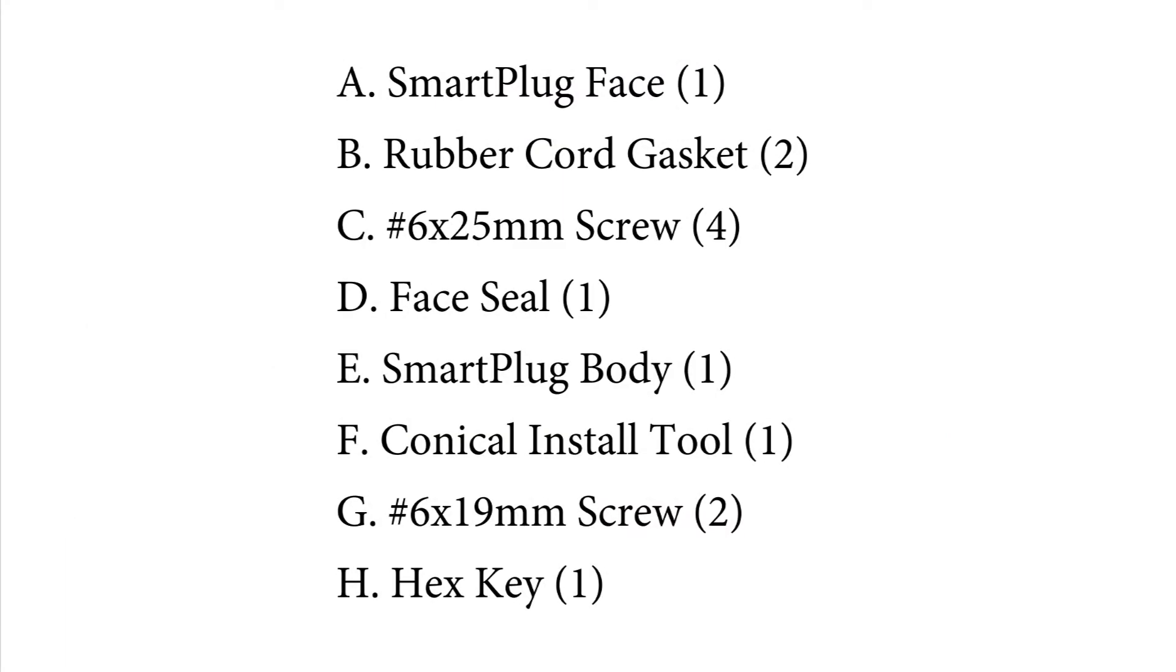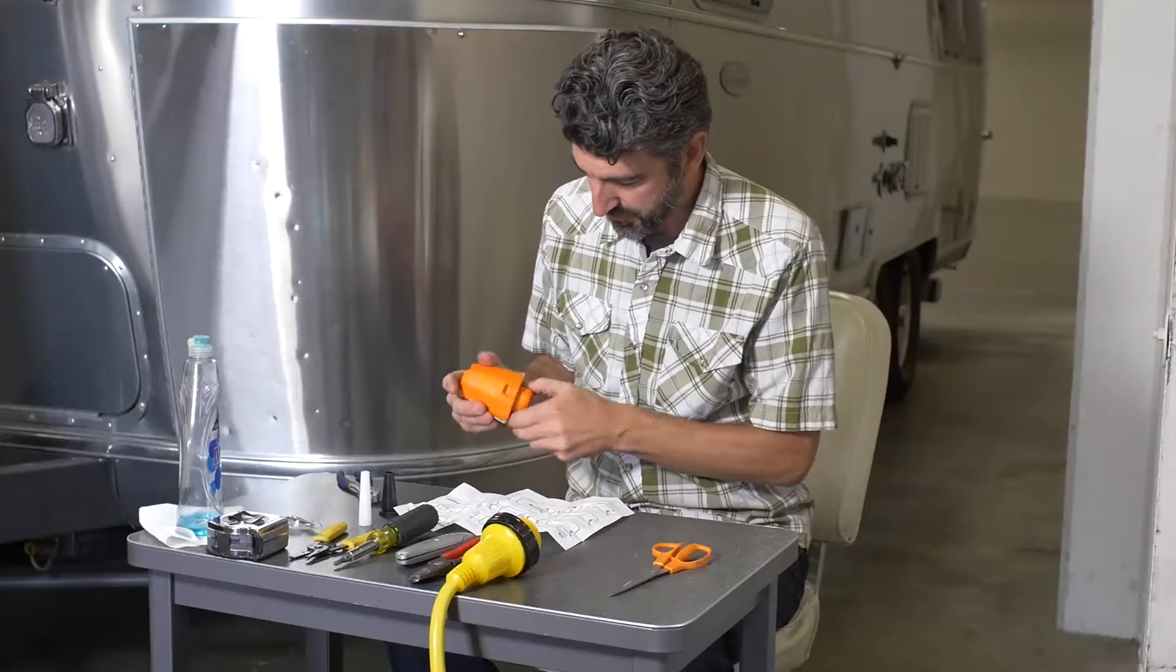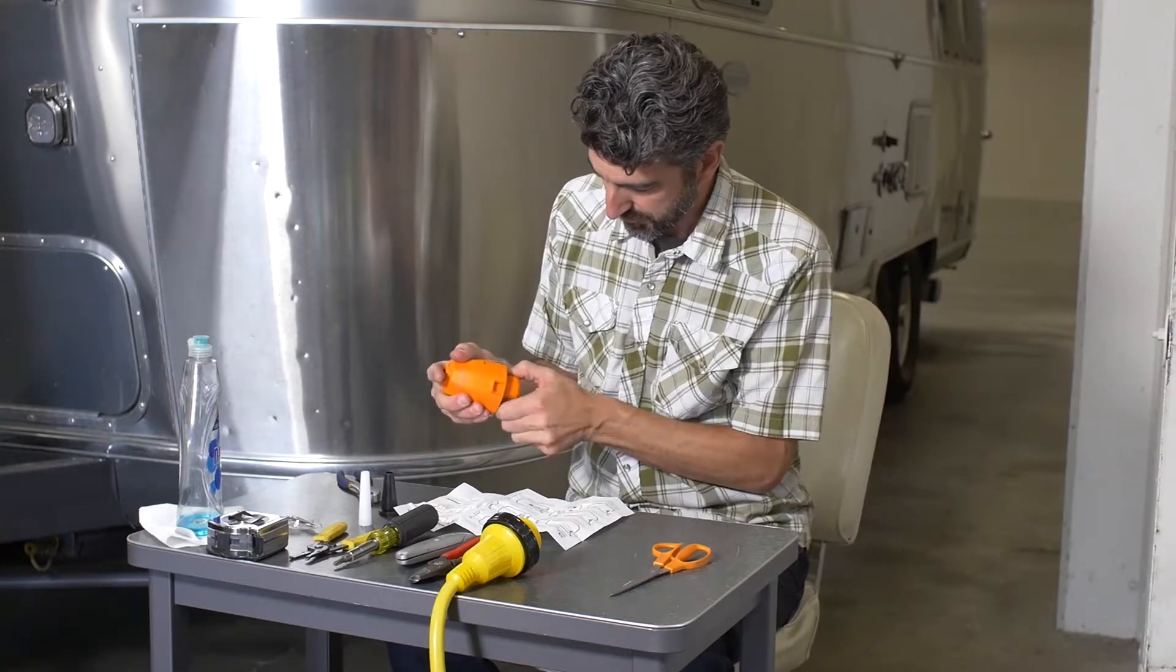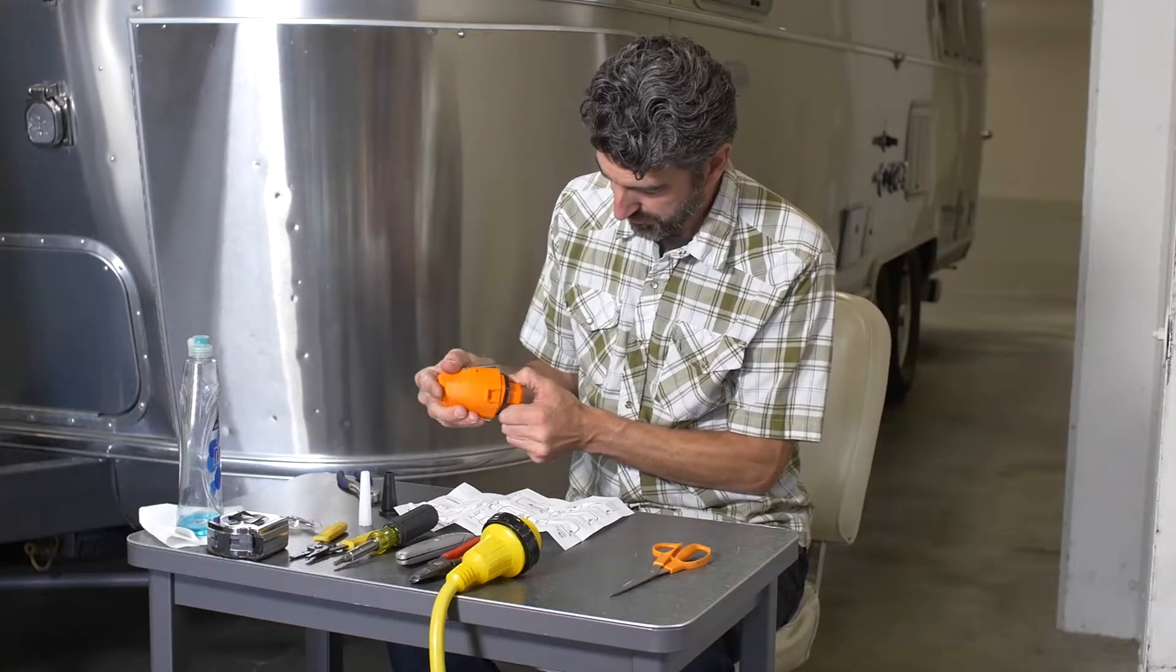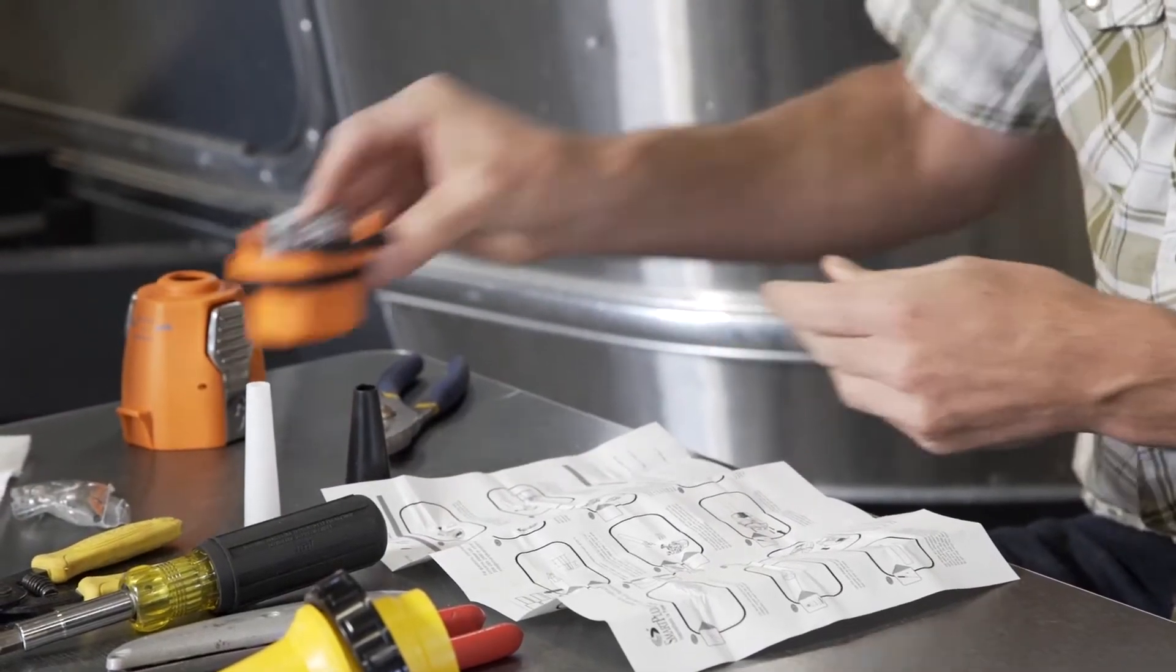Here are the materials we've included. Begin by separating the gasket, connector face, and the three screws from each other by removing the connector face from the connector body. Squeeze the levers and pull them apart, then set the connector face assembly aside.